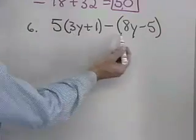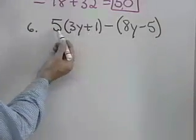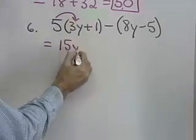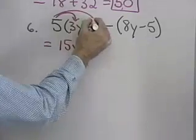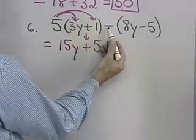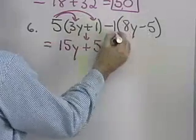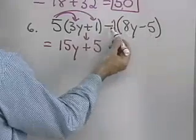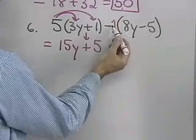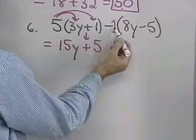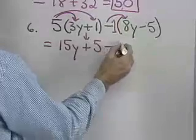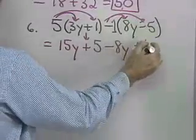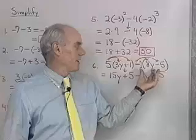The next problem involves some variables. I'm going to have to remove these parentheses by applying the distributive property. 5 times 3y is 15y, plus 5 times 1 is 5. Now, here I have to subtract this quantity. What I think I'll do is think of this as adding a negative 1 times this quantity. So now when I multiply, I'm going to take the subtraction sign with the 1 because I'm thinking that subtraction is addition of the opposite. So negative 1 times 8y would be minus 8y. Negative 1 times negative 5, positive 5.